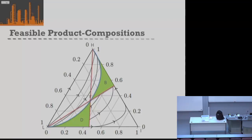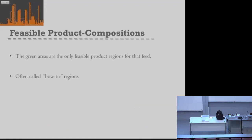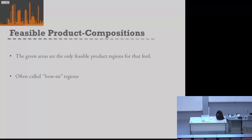These two green regions are the only feasible product regions from that particular feed. Because of their shape, they're often called bow-tie regions. And importantly — since this is a zeotropic system — the intermediate component I is not available as a potential top or bottom product, confirming what we already knew, but now derived from the residue curves and VLE knowledge rather than just assumed.